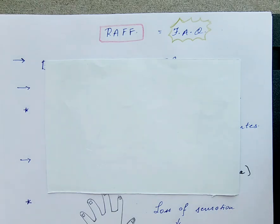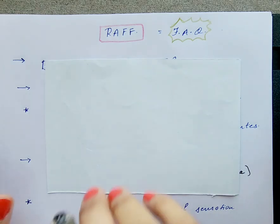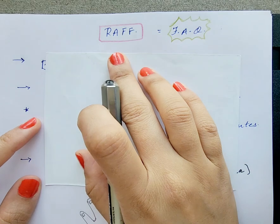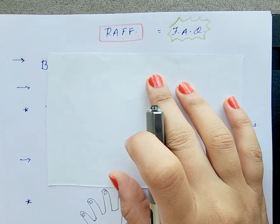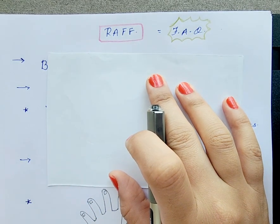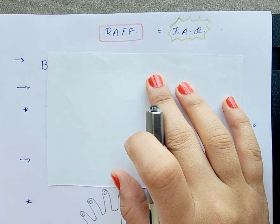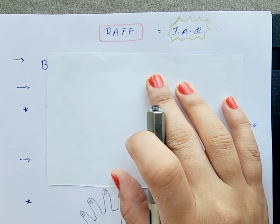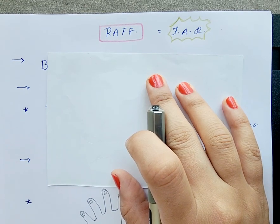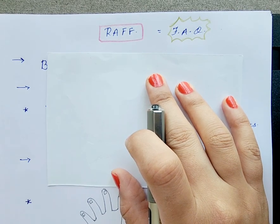Namaste and hello. Today we are going to continue with the series on radial artery forearm flap. We will first discuss frequently asked questions that come during viva, and these will also help us get information on how the flap marking is done.